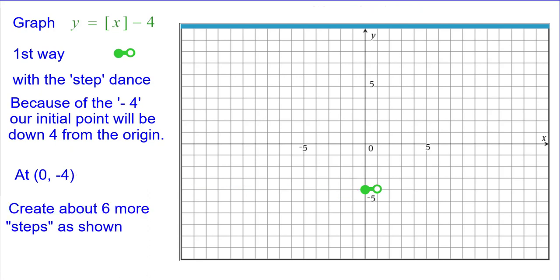We need to create about 6 more steps as shown, and this is the graph of y equals the greatest integer of x minus 4.